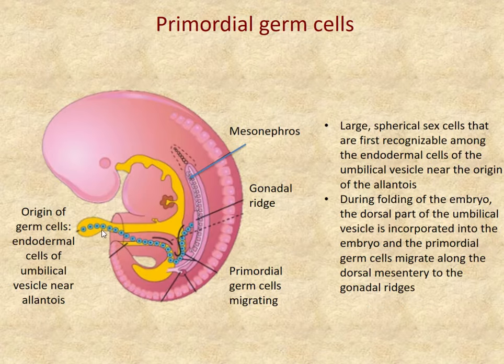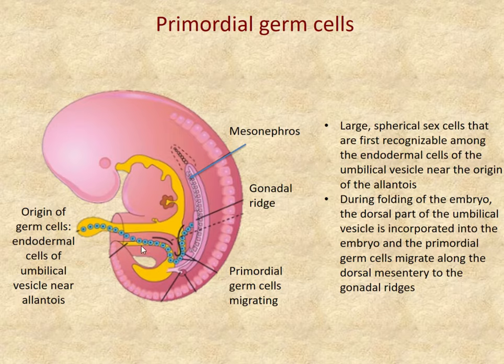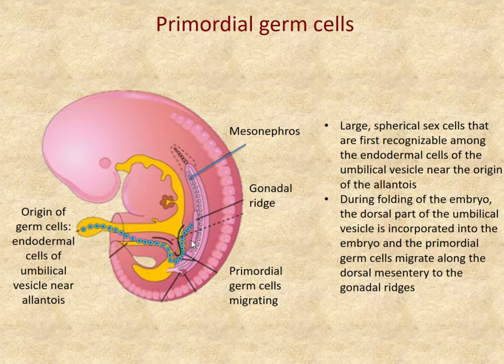The germ cells — the sex cells — did not originate at the gonadal ridge. They originated in the walls of the umbilical vesicle near where the allantois was located. These germ cells do migrate, which is one of the times in embryonic development when cells actually move and change position due to active migration rather than just differential growth. They migrate back to the genital ridge and are incorporated into the developing gonads.